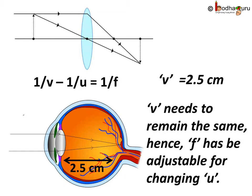In case of the eye, an image is formed on the retina and the distance between the lens and the retina is 2.5 cm. So, if v equals 2.5 cm, and v needs to remain the same.